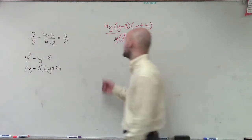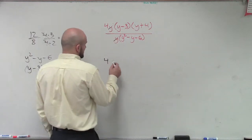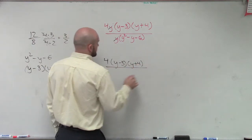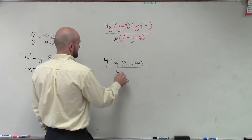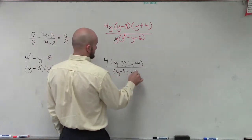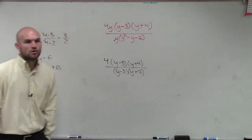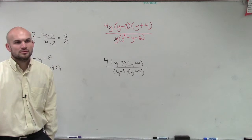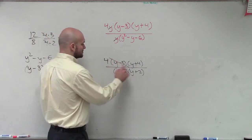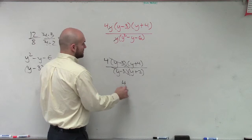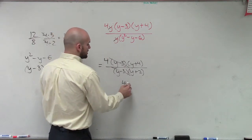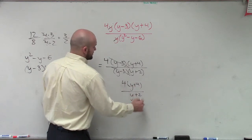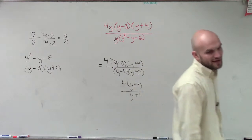That's very important because now, as I rewrite the problem, I don't need to write that y there. Do I now have some more terms that are going to divide into 1? Yes, I do. Therefore, the final answer is 4 times (y plus 4) divided by (y plus 2). And that's your final answer.